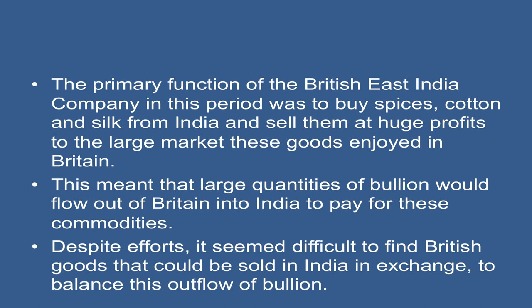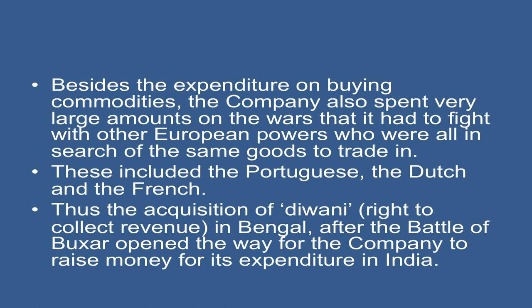Despite efforts, it seemed difficult to find British goods that could be sold in India in exchange to balance the outflow of Indian goods. Besides the expenditure on buying commodities, the company also spent very large amounts on the wars it had to fight with other European powers who were all in search of the same goods to trade in. These included the Portuguese, the Dutch, and the French. Thus, the acquisition of Diwani rights — that is, the right to collect revenue in Bengal — after the Battle of Buxar opened the way for the company to raise money for its expenditure in India.